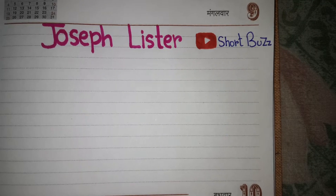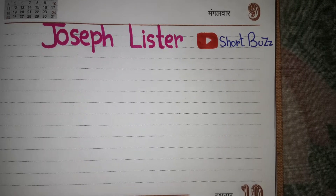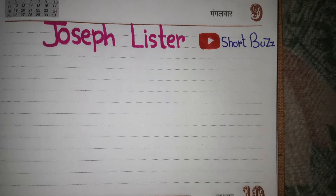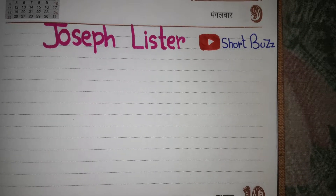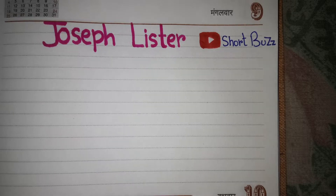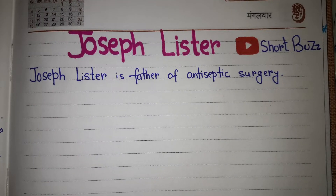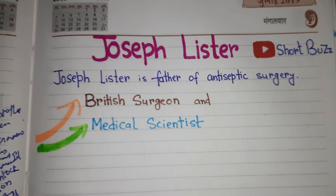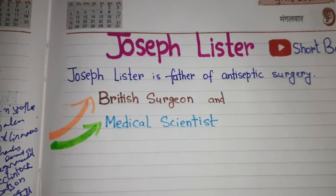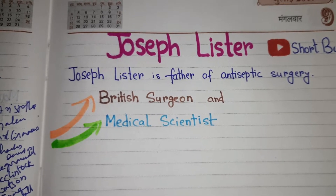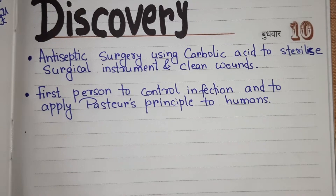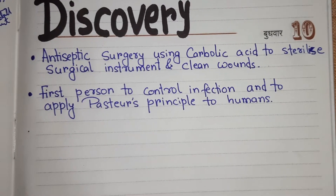Hello everybody, welcome back to the channel. Today we are going to discuss Joseph Lister's history, discovery, and contributions. Joseph Lister is known as the father of antiseptic surgery. He was a British surgeon and medical scientist, and the founder of antiseptic medicine.